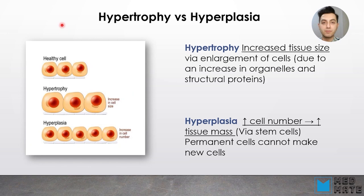The first cellular adaptations we want to get introduced with are hypertrophy and hyperplasia. What is the difference between hypertrophy and hyperplasia? Hypertrophy is when there is increased tissue size, and this happens via enlargement of cells. An enlargement of cells is due to an increase in the amount of organelles or structural proteins. So in this type of cellular adaptation, there is no stem cell involved, but within the cell itself there is an enlargement and increased production of organelles.